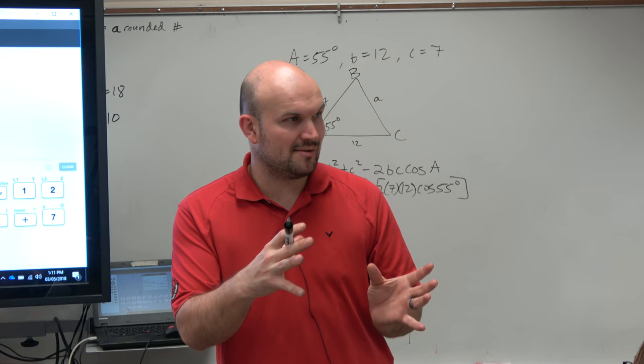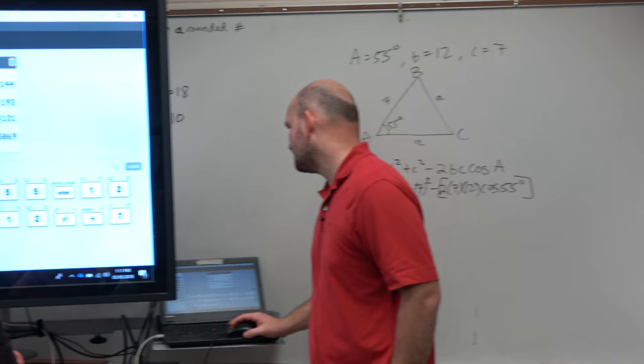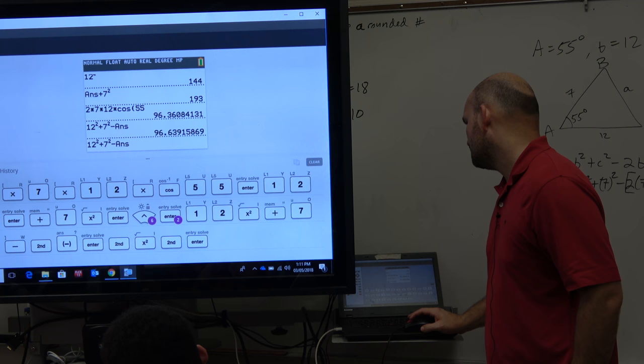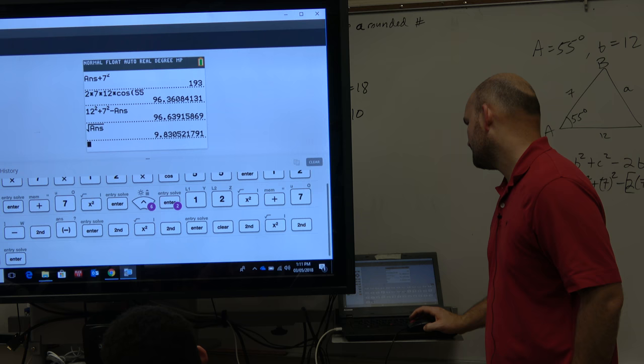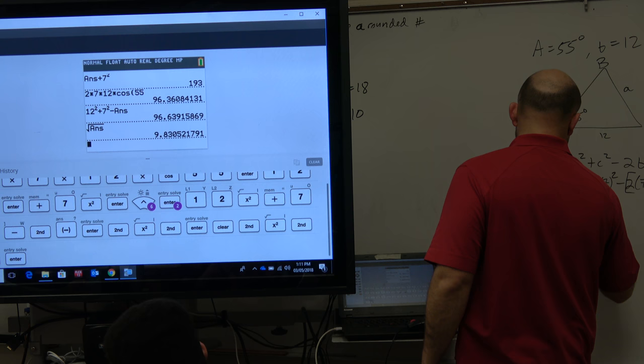No, right? So therefore, it's just going to be the positive. So now I take the square roots of my answer. Oops. Square roots, second answer, and you should get 9.83. And let's round this to the nearest thousand.